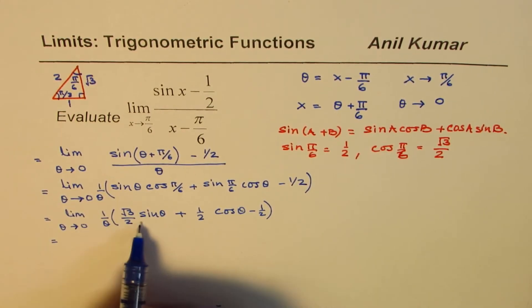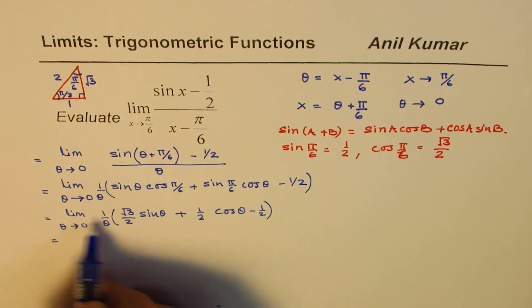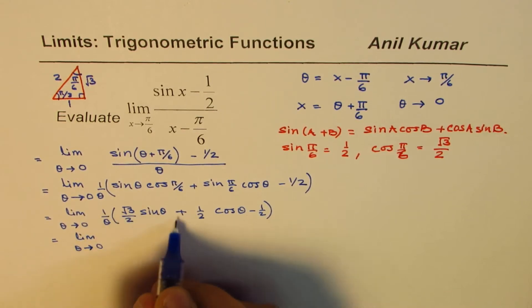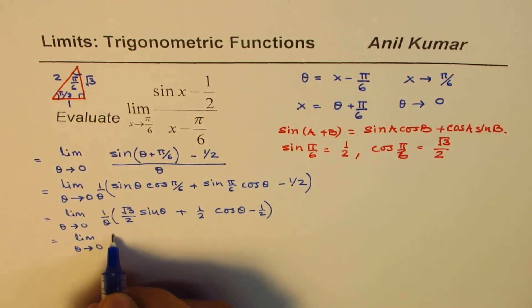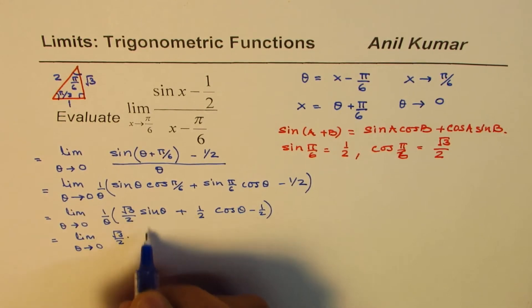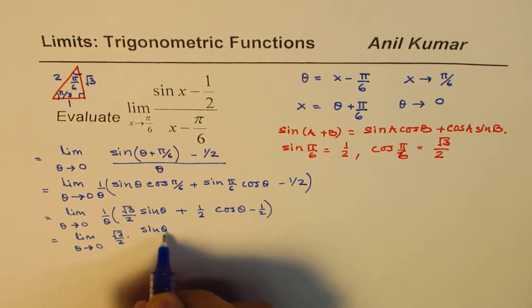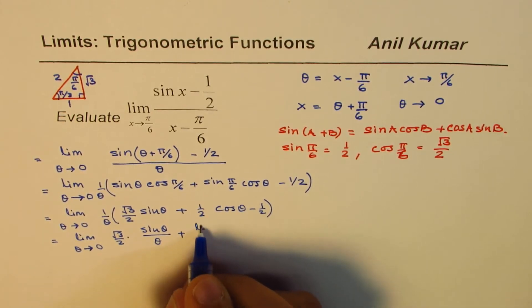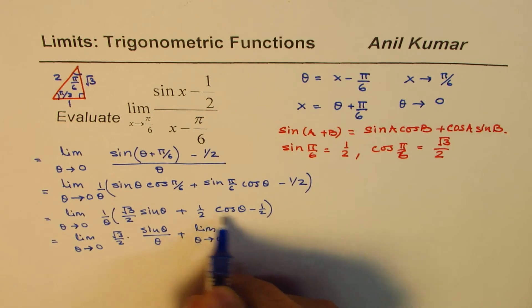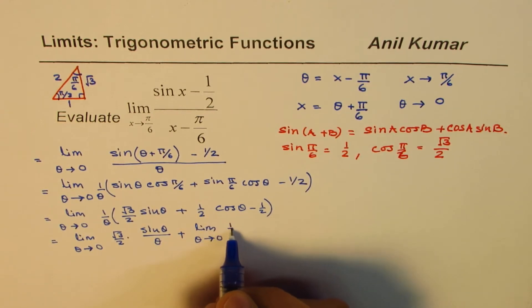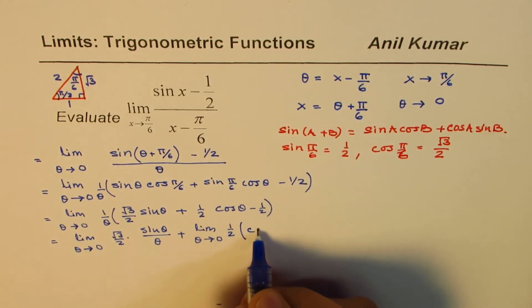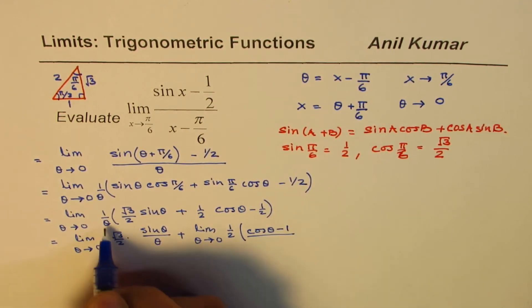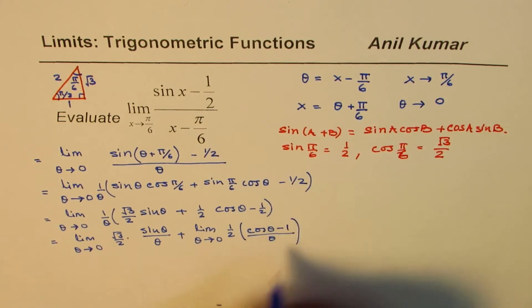Now I can split this into two separate limits. The first part is (√3/2) · limit as θ → 0 of sin θ / θ. The second part is (1/2) · limit as θ → 0 of (cos θ - 1) / θ.